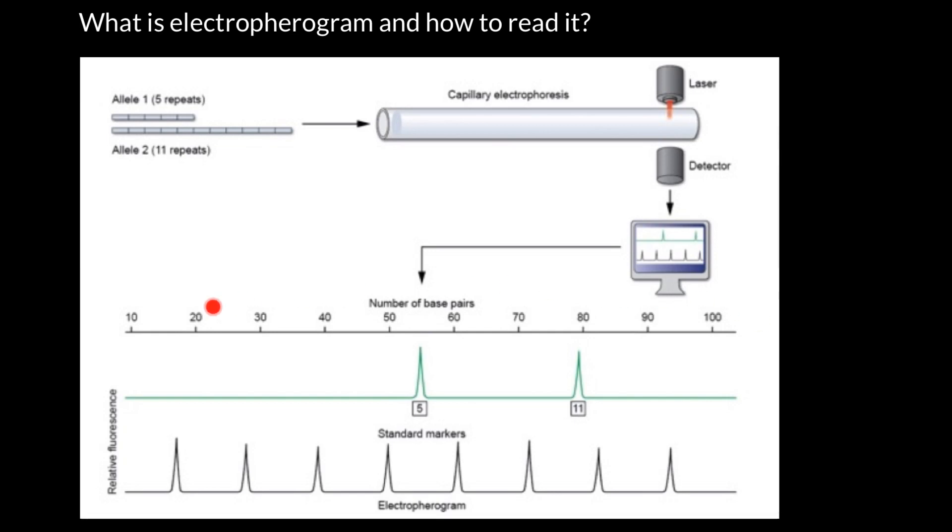An electropherogram is actually this part of the picture. We see a reference line here with number of nucleotides, a reference ladder, and spikes that represent these two molecules.